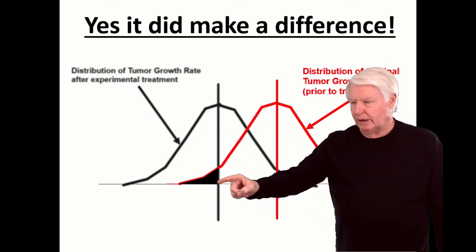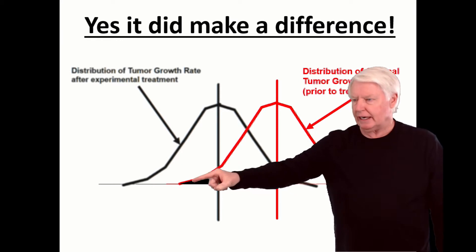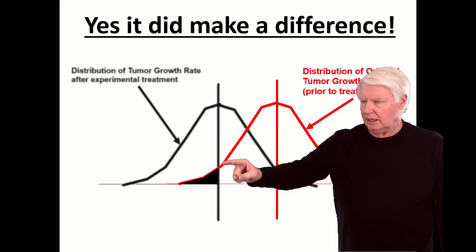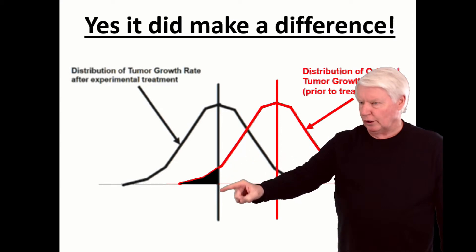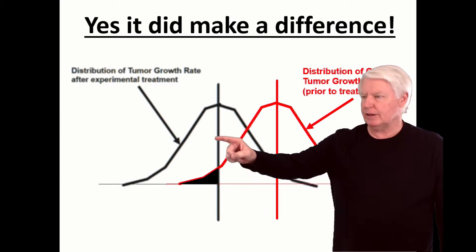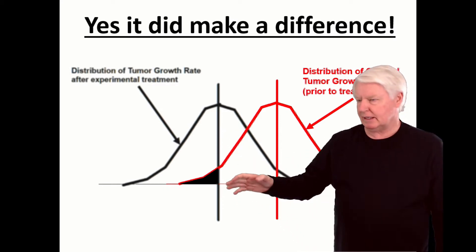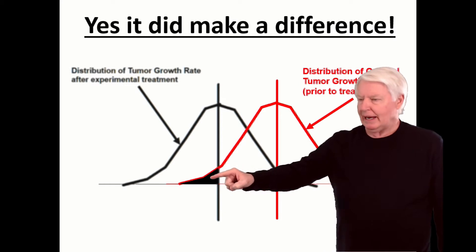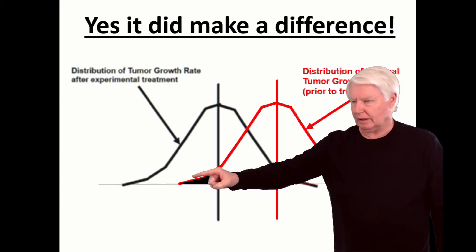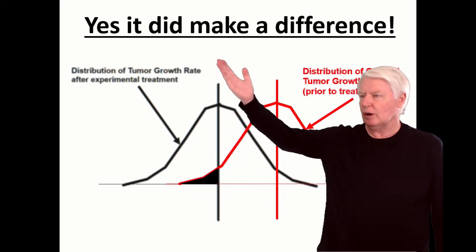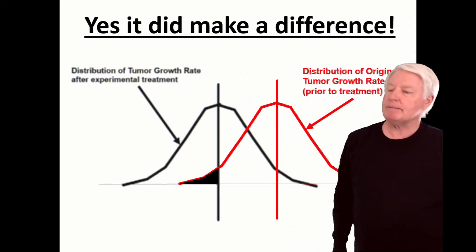Remember, this shaded area where this population distribution goes over the average of the treatment sample, that is the probability that I'm wrong. That shaded area is the probability I'm wrong when I said, yes, it did make a difference.